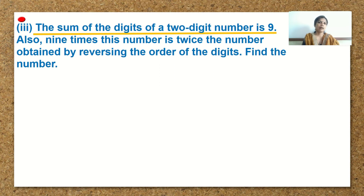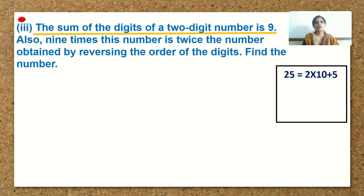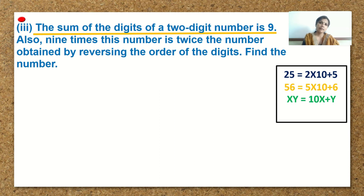Before going ahead, I would like all of you to look at this. When we consider any two-digit number, say 25, we can write it as 2 into 10 plus 5, because 5 is at the unit's place and 2 is at the 10's place. Similarly, if I take 56, I can write 5 into 10 plus 6. If I take a number xy, I write x into 10 plus y. If I take yx, I write y into 10 plus x. We are going to use the same thing in this sum.